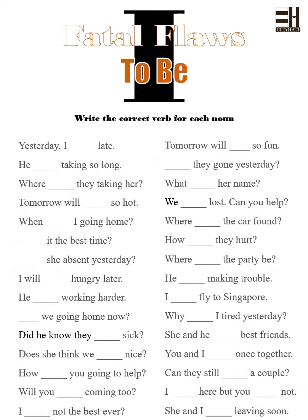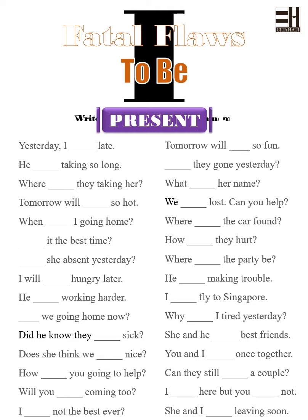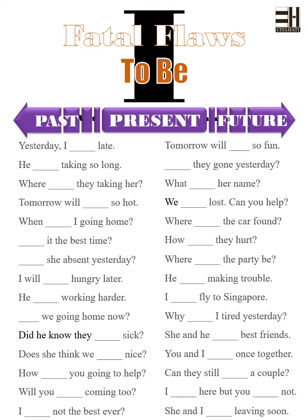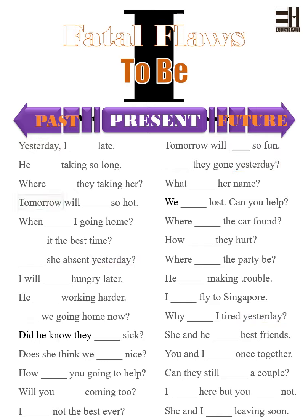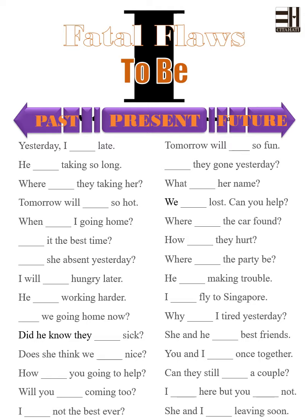The second part is to fill in the correct verb using either present, past, or future tense. Be aware that the context of the sentence gives the clues to which tense you will use. If it happened in the past — like yesterday, before, or earlier — use past tense. If it happens in the future — tomorrow, later on, next time — use future tense. Otherwise, use present tense. Please fill in the blanks with the correct verb tense.